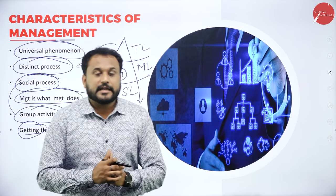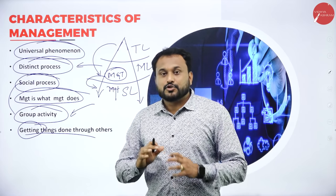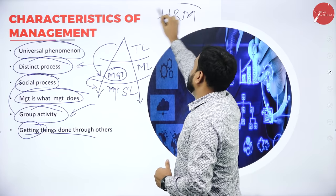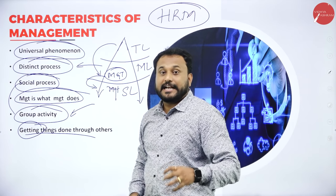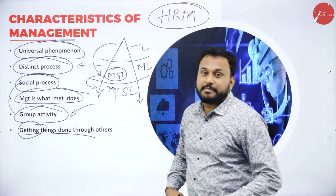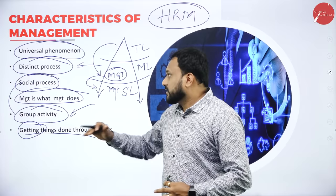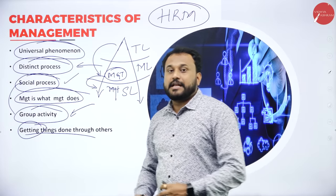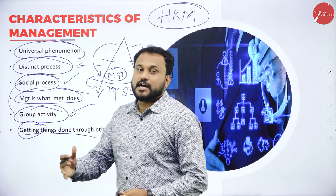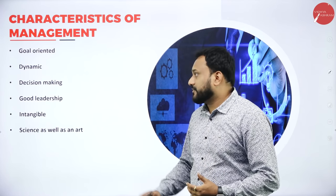In a nutshell, the real fact about corporations is that it is all about managing human beings. We call that HRM — Human Resource Management. So here also, management is getting things done through others, and that too efficiently and effectively. To recap the characteristics of management: first is universal phenomenon; second is distinct process; third is social process; fourth is management is what management does; fifth is group activity; and the last one is getting things done through others. There are many more characteristics of management, but for your syllabus, let's restrict ourselves to these points.